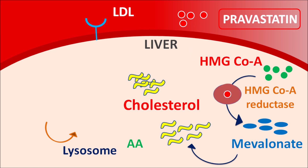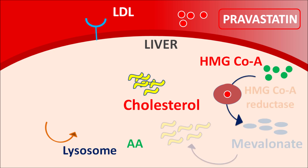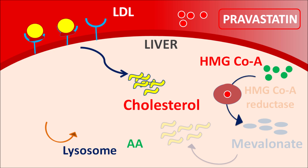Pravastatin blocks the HMG-CoA reductase enzyme, inhibiting cholesterol biosynthesis within the liver. When this enzyme is inhibited and the liver receives less cholesterol, it responds by expressing more LDL receptors, which bring LDL cholesterol into the liver. This reduces circulating LDL cholesterol levels within the blood, reducing the risk of atherosclerosis. In this way, pravastatin reduces LDL cholesterol, reduces total cholesterol, and also increases HDL cholesterol.